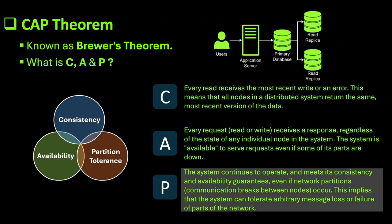Lastly it is Partition Tolerance. It means that the system continues to operate and maintain its guarantees even when there are network partitions — situations where some nodes in the system cannot communicate with others. In a distributed system, a network partition occurs when there is a communication breakdown between different parts of the system. This could be due to network failures, hardware issues, or other faults that prevent nodes from syncing with each other.